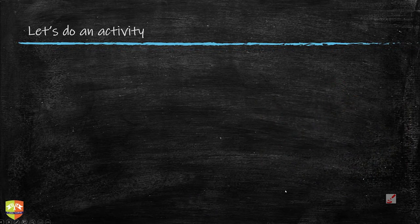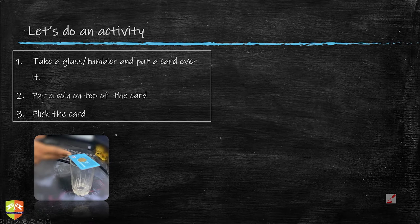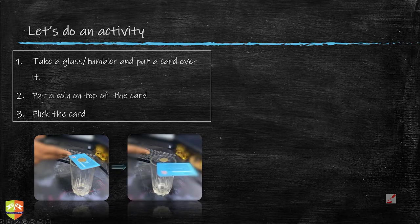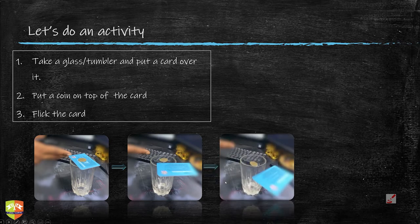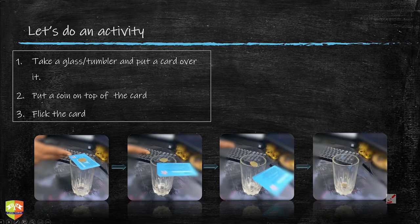Let's do a very famous activity — you can do it right now. Get a glass or tumbler and put a card over it, then place a coin on top of the card. What you have to do is flick the card with force. You can see a screen grab where the card is in the air — at that instant the card has been displaced and the coin is flying in the air, staying wherever it was. As the card moves away, the coin starts falling down and eventually lands in the tumbler.